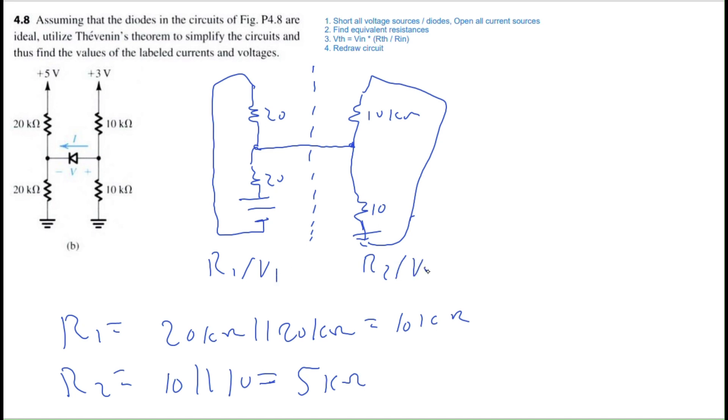I'll also call this V1 and V2. So V1, which is the Thevenin voltage for the left side of the circuit, will be the input voltage, so 5 volts, multiplied by the Thevenin resistance, which is 10 kilo ohms for this side, divided by the input resistance, which is the resistance observed by the voltage source. So that's 20 kilo ohms here. So V1 is equal to 2.5 volts.